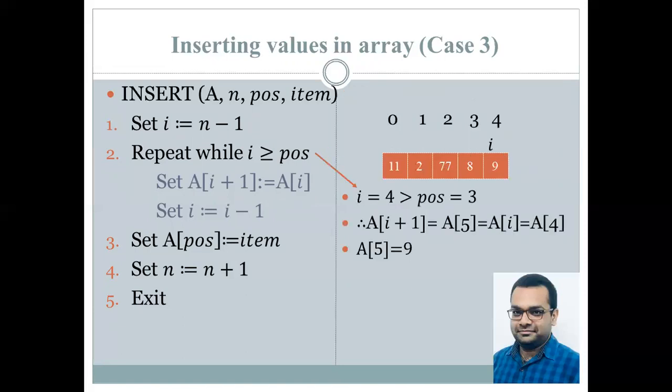Now, the second statement is executed. And the check is performed if the value of i is greater than or equal to position. Which is the case over here exactly. The value of i is 4. It is greater than the position that is 3. Therefore, the statements inside the loop are executed. The array at index i plus 1 gets the value of i. That is, A of i plus 1, that is equal to 5.